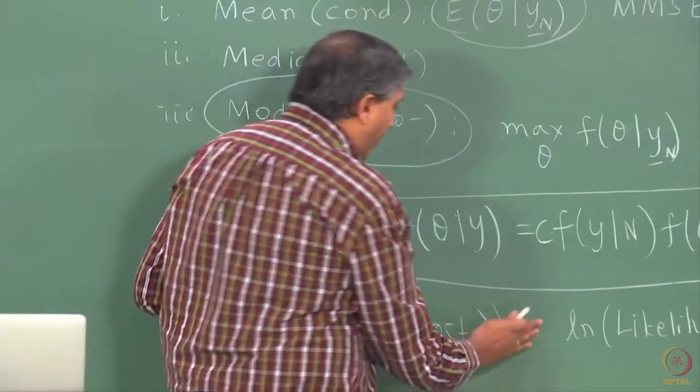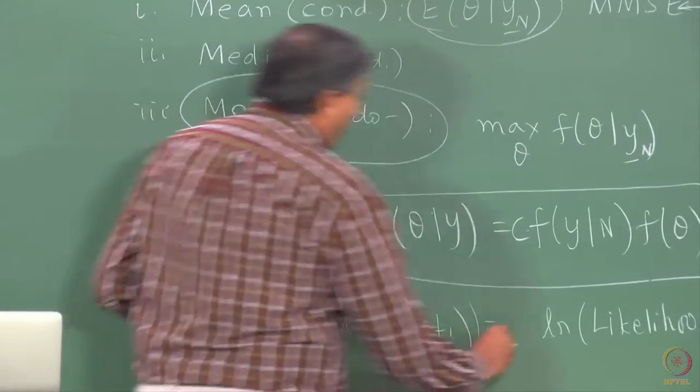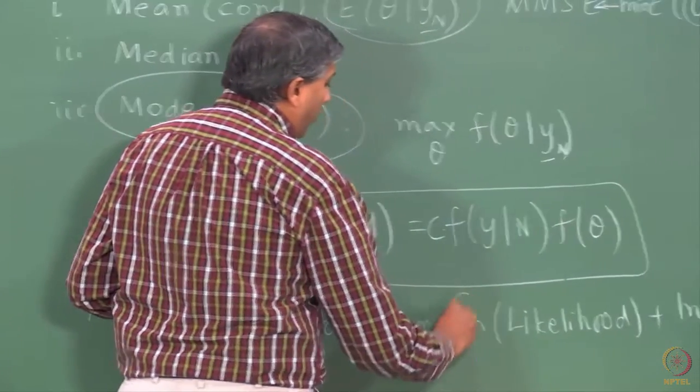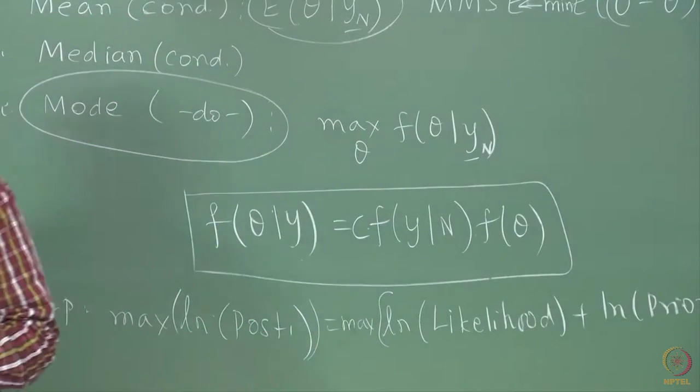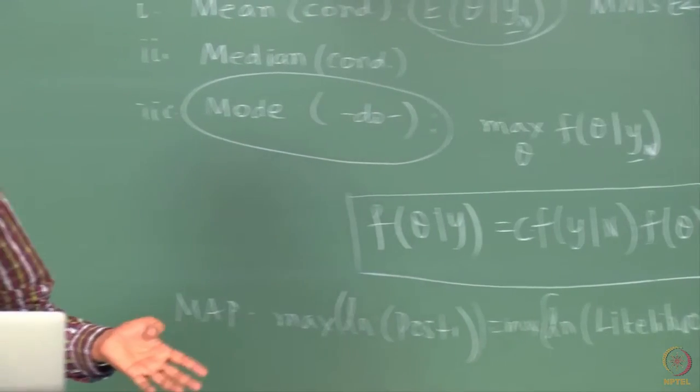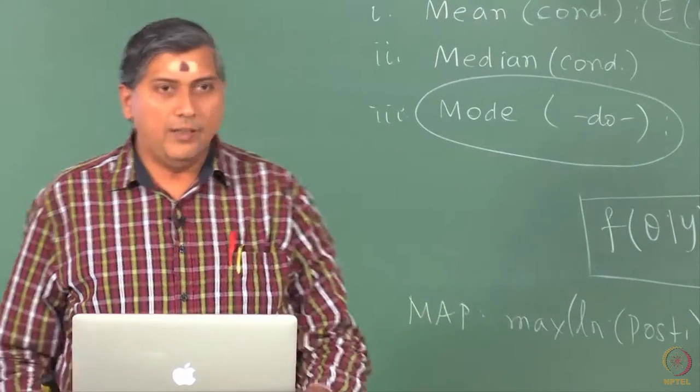So, I am going to pick here the maximum when I work with MAP, essentially I am picking maximum of this objective function or minimum of negative log likelihood plus negative of that log prior.